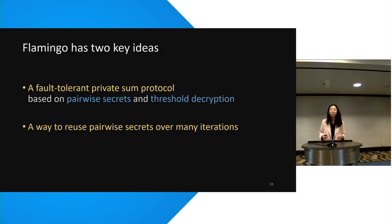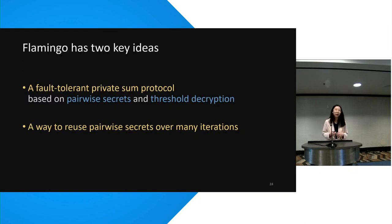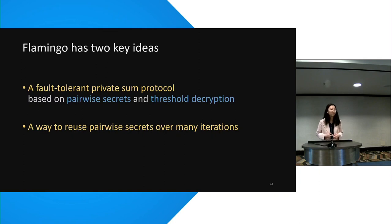Our protocol is based on two key ideas. The starting point is a fault-tolerant private sum protocol based on two classical cryptographic ideas: the first is a pairwise cancelling trick using DCNet, and the second is distributed decryption. We are then able to extend this protocol to efficiently run many sums by reusing the pairwise secrets. The two key ideas are not independent — the design of the fault-tolerant protocol allows a simple modification to reuse the secrets.